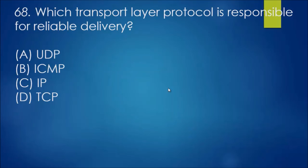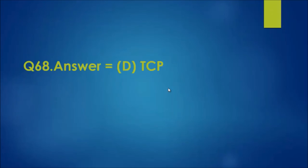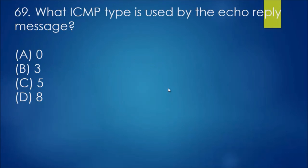Question 68: Which transport layer protocol is responsible for reliable delivery? UDP is not reliable, IP is a standard, ICMP isn't exactly a delivery mechanism, so that leaves us with TCP. TCP is responsible for reliable delivery, UDP is not.